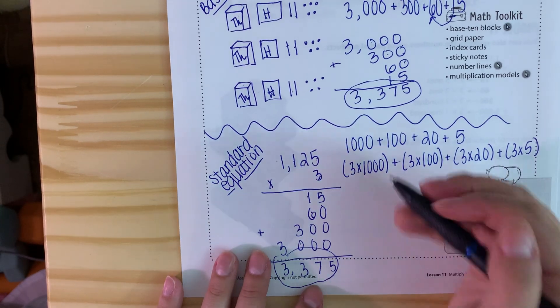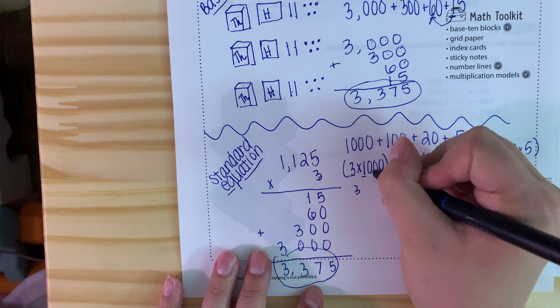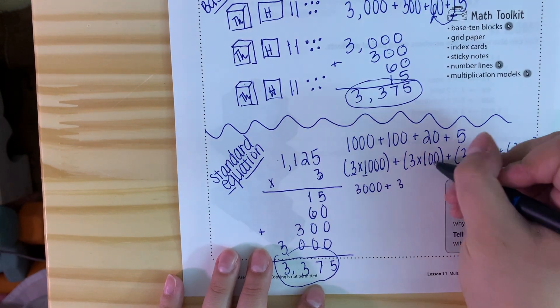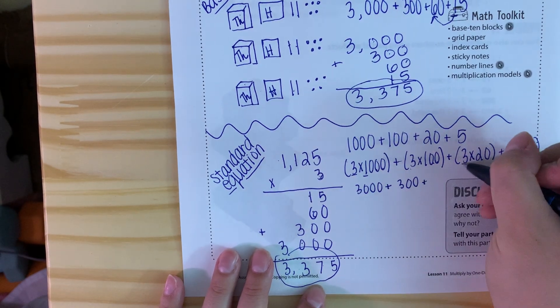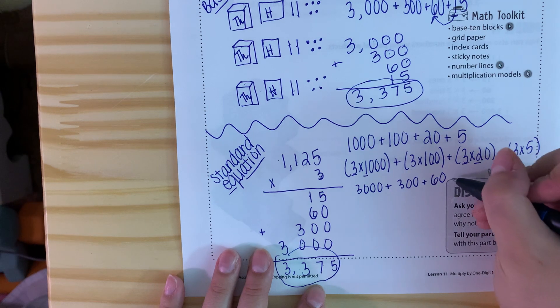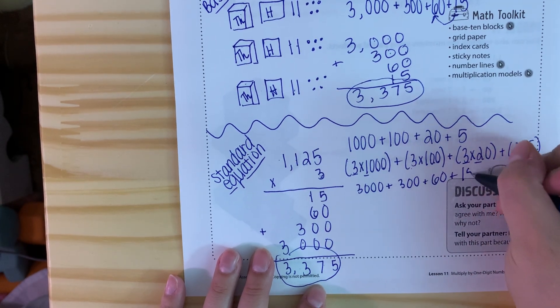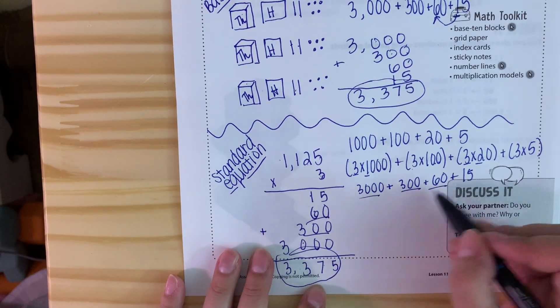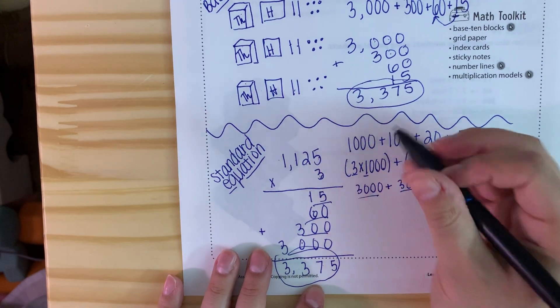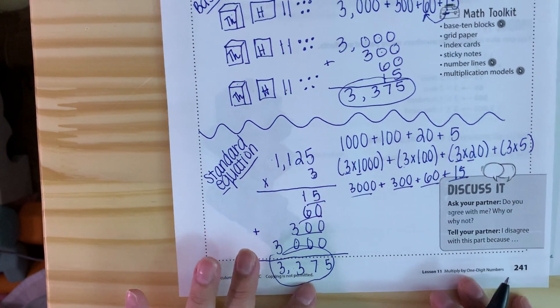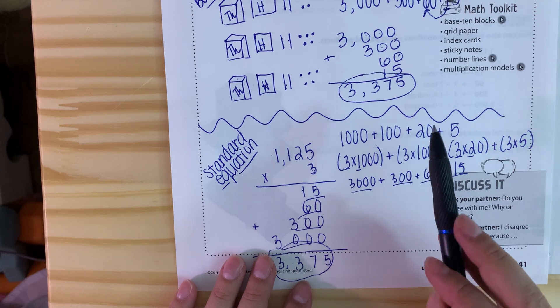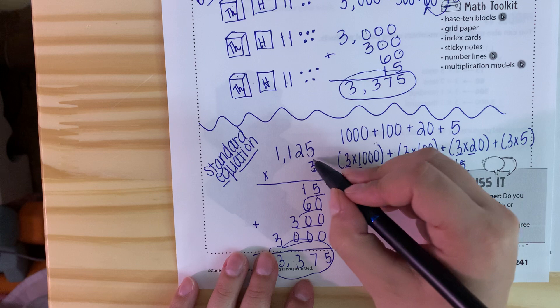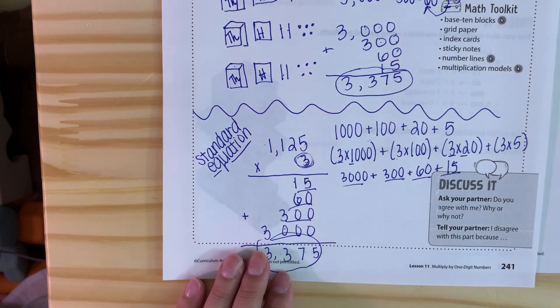Now if you wanted to do it this way, you also could have done it like this: 3 times 1,000 plus 100 plus 20 plus 5, putting it in expanded form. And then just doing 3 times 1,000 plus 3 times 100 plus 3 times 20 plus 3 times 5. And you can see friends how they match up. So stacking it works the same way as putting it into expanded form. But remember if you put it into expanded form, you need to take each number in the expanded form and multiply it by the number that the problem is asking you to.